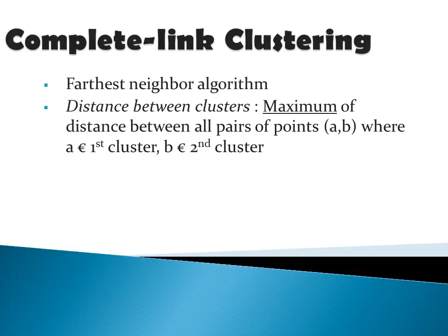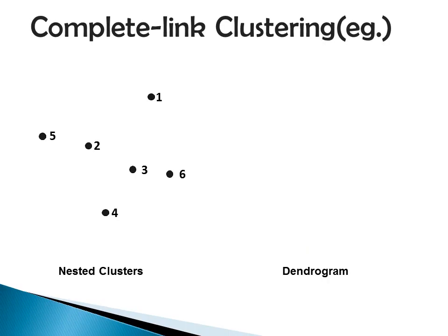The next method is complete link clustering, also called the farthest neighbor algorithm. Here we consider the maximum distance between data points, where a belongs to cluster 1 and b belongs to cluster 2. In the figure, the leftmost a and the rightmost b are considered for merging — that is, the maximum distance between two cluster points is considered for merging.